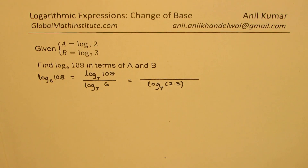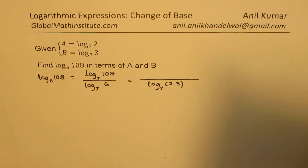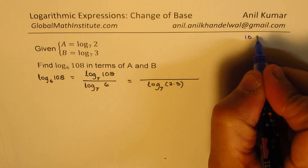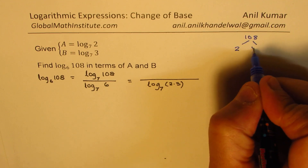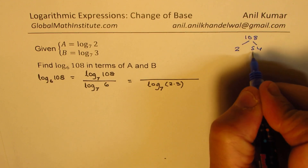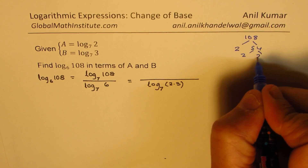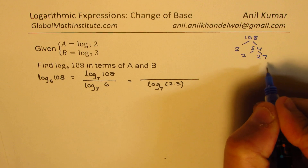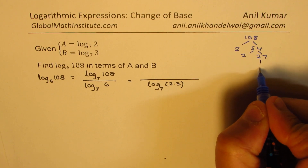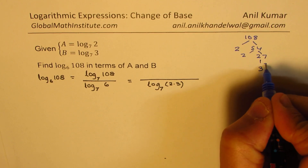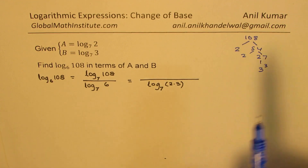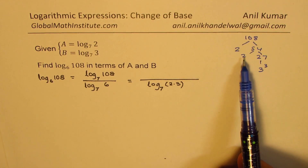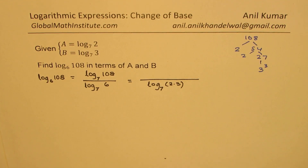How about 108? Let's factor 108 and figure this out. 108 divided by 2 is 54, divided by 2 again is 27, and 27 is 3 cubed. So 108 can be written as 2 squared times 3 cubed.